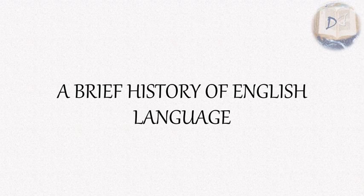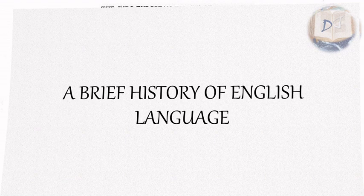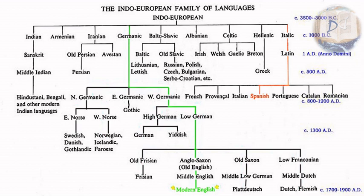A brief history of the English language. English is a member of the Germanic branch of the Indo-European language family, which includes German, Nordic languages, Frisian, etc.